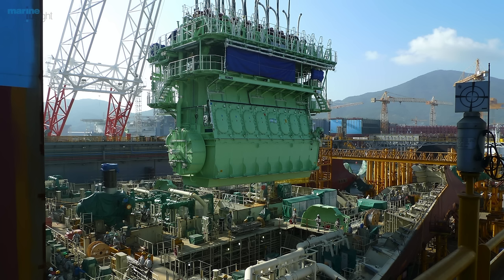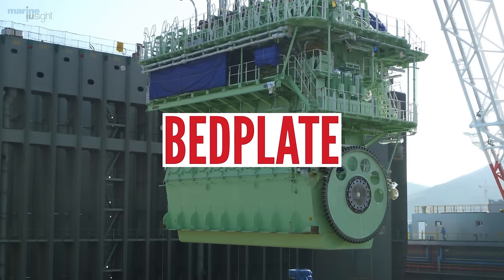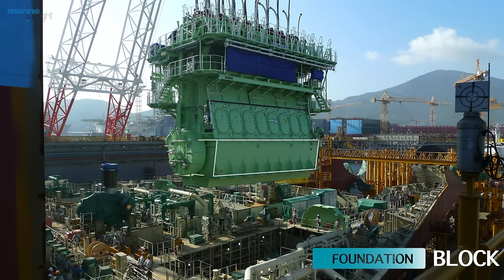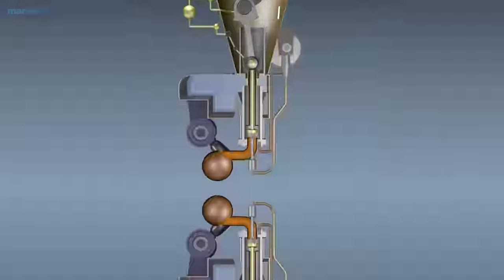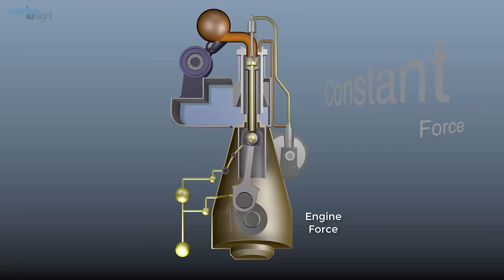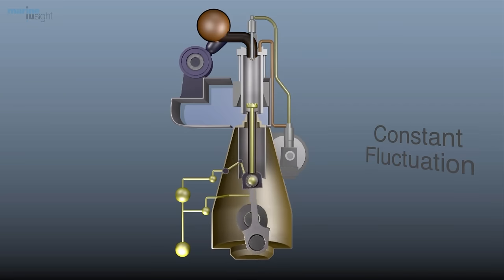Looking at the exterior of the engine, it comprises of the following. Bed plate: The bed plate is the foundation block for a two-stroke engine. It is built to withstand the constant force from the engine but is also flexible enough to handle constant fluctuations.